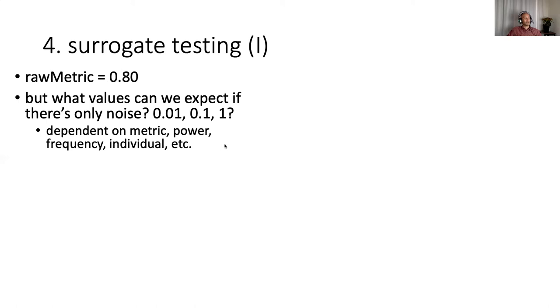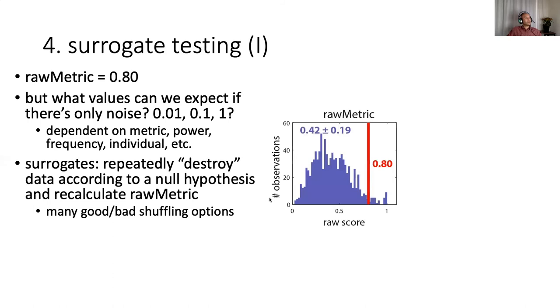And unfortunately, there's usually not an analytical way of deriving this. The noise level depends not only on your metric but also on things like the power, the frequency, the individual, things like that. So the way we typically do this is we construct a large set of surrogates where we repeatedly destroy aspects of the data according to some null hypothesis, and we recalculate the raw metric many times, say a thousand or 10,000 times even. Here's an example within purple here, there's a histogram showing you the values of your metric if they're based on this shuffling approach.